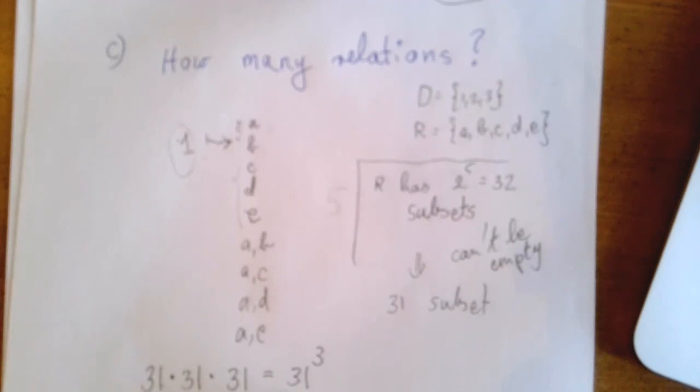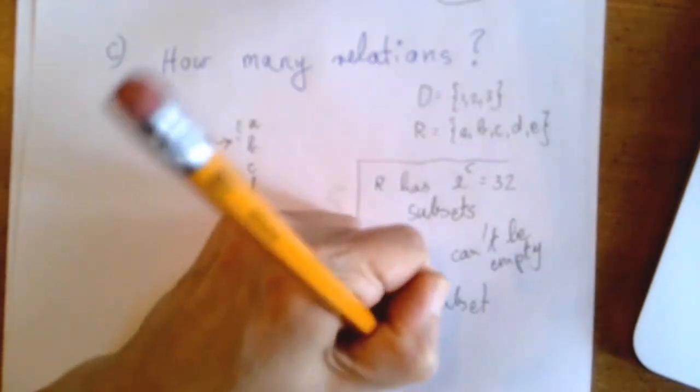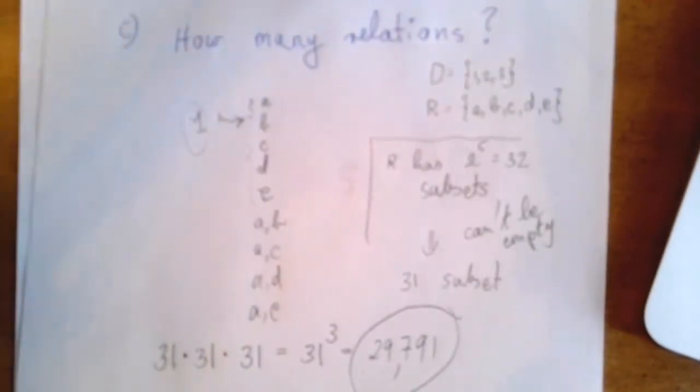So that means we have 31 to the third power, or 29,791. That's a lot of relations.